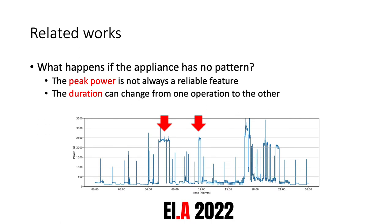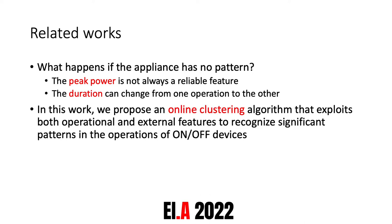But what happens if the appliance has no specific pattern? We know that the peak power is not always a reliable feature, because two different appliances can present the same peak power level. Also, the duration can change from one operation to the other — for example, the dishwasher works with the same program and has a regular duration, but the activation of a heater can differ depending on the specific usage by the user. For this reason, we are proposing an online clustering algorithm that exploits additional features beyond peak power and duration. These features can be both operational or external variables, useful to recognize significant patterns in the operations of on-off appliances.